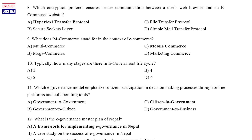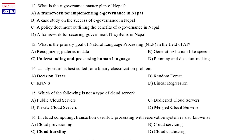Question 10: Typically, how many stages are there in the e-government life cycle? a. 3, b. 4, c. 5, d. 6. Question 11: Which e-governance model emphasizes citizen participation in decision-making processes through online platforms and collaborating tools? a. Government to government, b. Government to citizen, c. Citizen to government, d. Government to business. Question 12: What is the e-governance master plan of Nepal? a. A framework for implementing e-governance in Nepal, b. A case study on the success of e-governance in Nepal, c. A policy document outlining the benefits of e-governance in Nepal, d. A framework for securing government IT systems in Nepal.